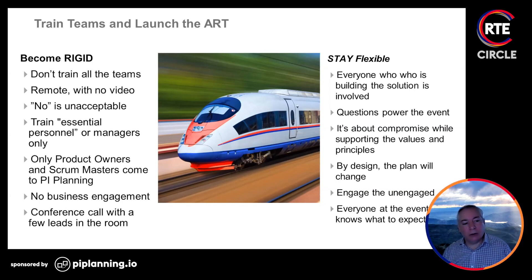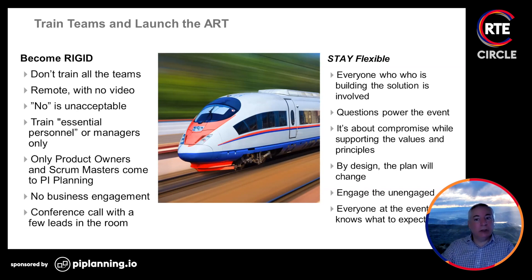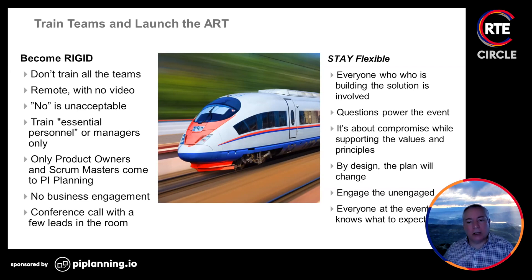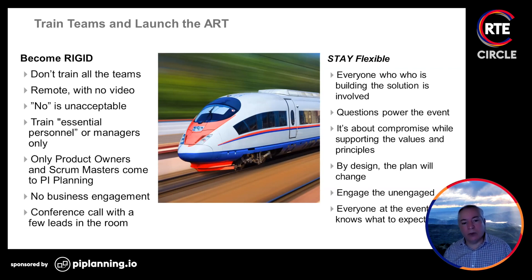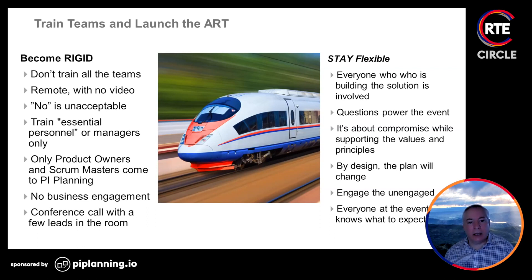Training essential personnel — managers only — is an anti-pattern. Everyone needs to be trained; if it's just managers, you won't really engage the whole team. Product owners and scrum masters aren't the only ones who should be at PI planning — the whole agile team should be there. Business engagement with lean-agile leadership is important for the continued success of the ART. A conference call with just a few people in the room isn't going to get you where you want to be.